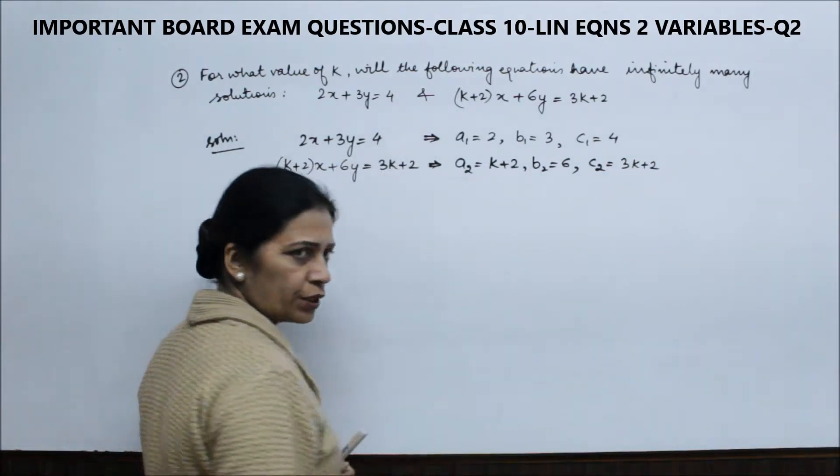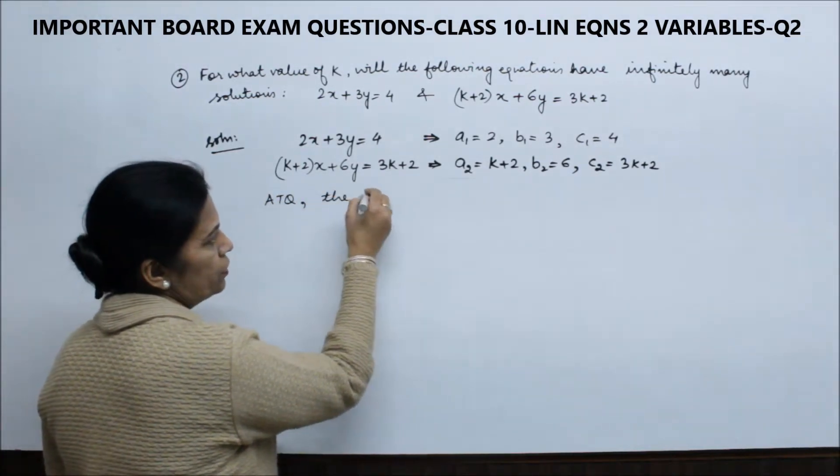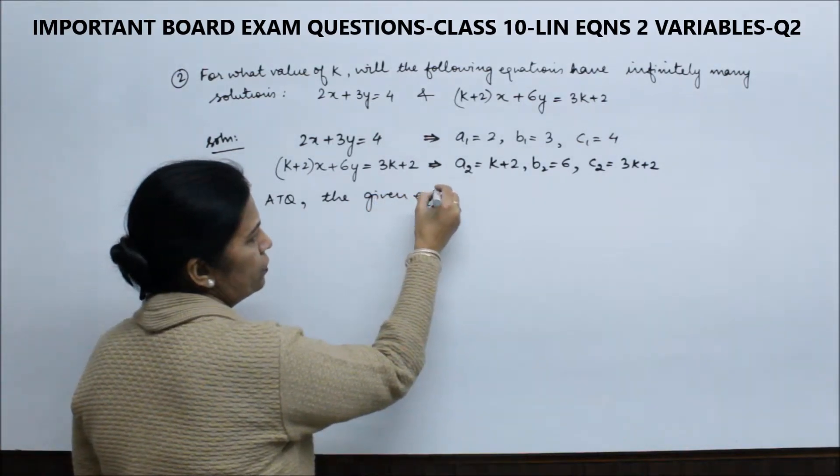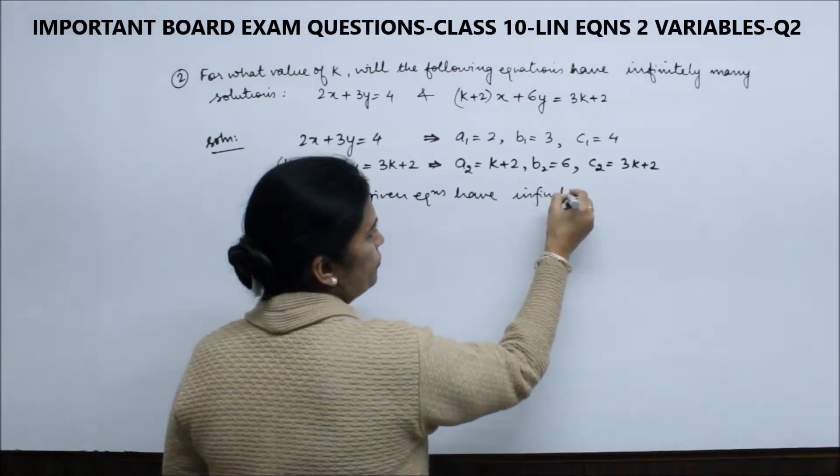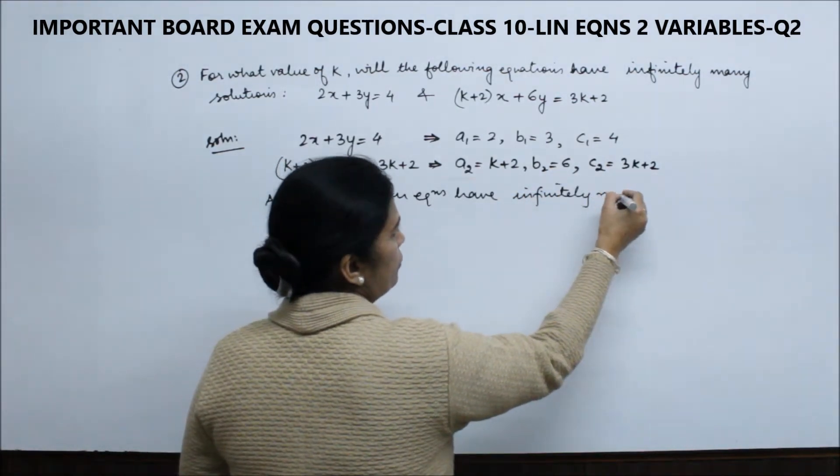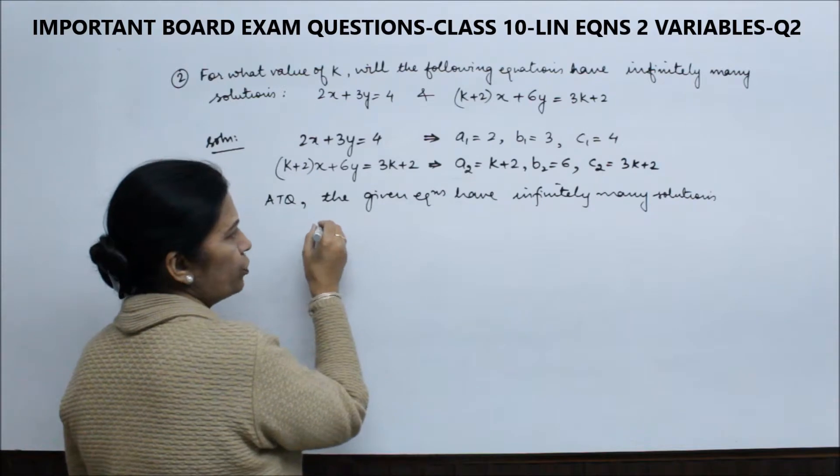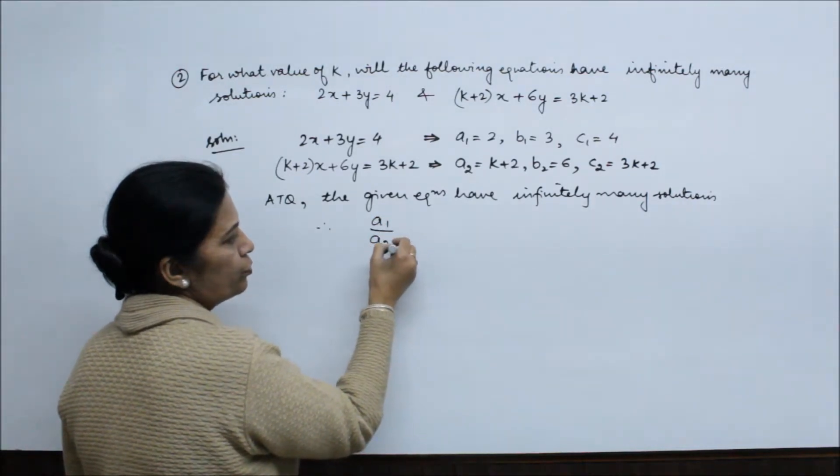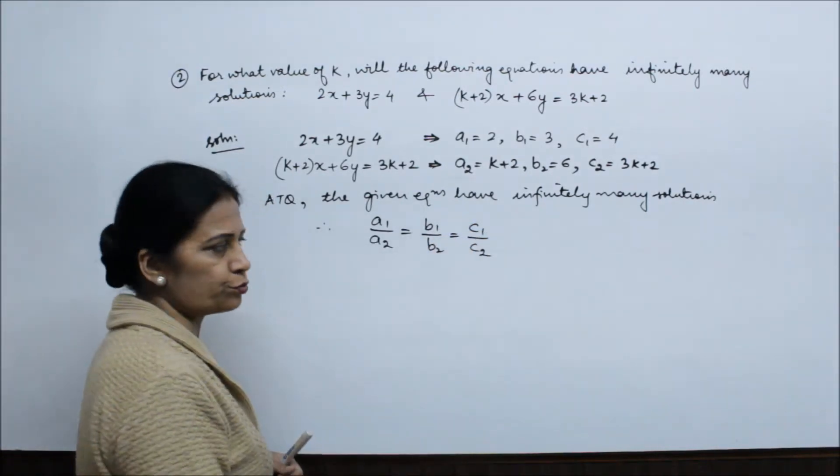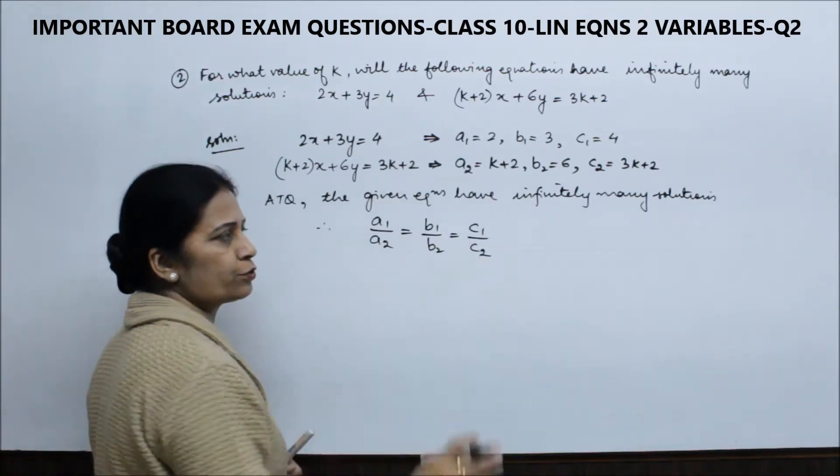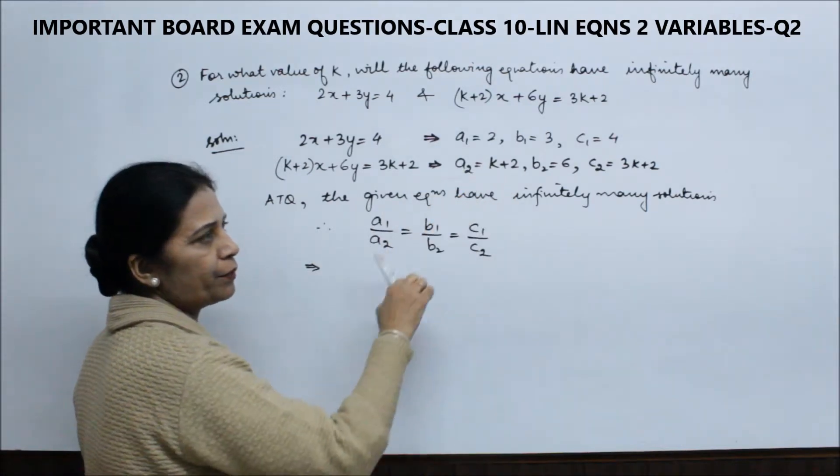According to the question, the given equations have infinitely many solutions. For infinitely many solutions, a1/a2 = b1/b2 = c1/c2. All three ratios are equal if there are infinitely many solutions; you need to remember this. Now we'll put the values we've written into these ratios.